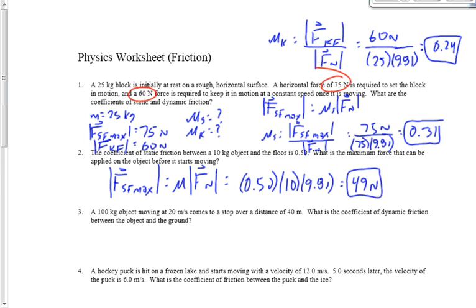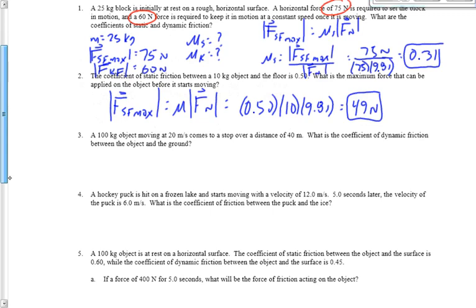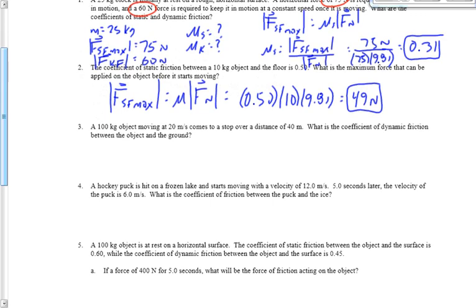49 Newtons is the maximum force of static friction — that doesn't mean the force of static friction will always be 49 Newtons. If I push with 30 Newtons, friction is 30. If I push with 48, friction is 48. The maximum force I can push with before it begins to move is 49 Newtons. Now they start getting a bit trickier.